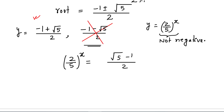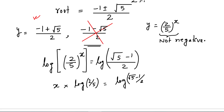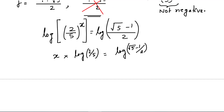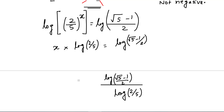Now, since y equals 2 by 5 raised to the power x equals root 5 minus 1 divided by 2, we take log on both sides. Using the log rule, the left side becomes x times log of 2 by 5, and the right side becomes log of root 5 minus 1 divided by 2. So x equals log of root 5 minus 1 divided by 2, all divided by log of 2 by 5. This is the answer for x.